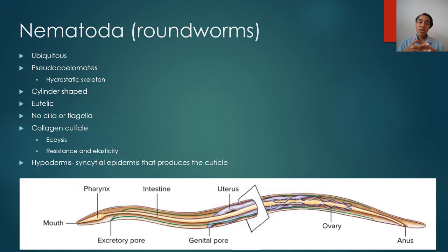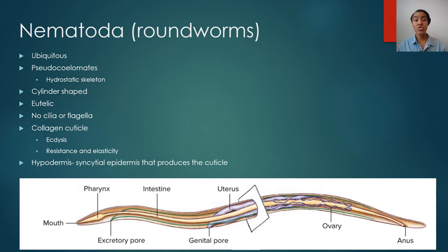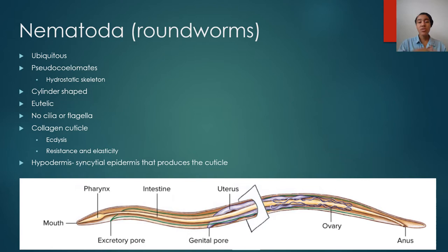Their cuticle, because it's made of collagen and the way the collagen structure overlaps, allows them to have very elastic movement. But this collagen cuticle also protects them from drying out, from host gut and digestive juices, and from any type of danger. So it serves two functions: protection and elasticity. Nematodes have an epidermal layer called the hypodermis — a syncytial epidermis that produces the cuticle. If you don't remember what a syncytium is, please go back to our Platyhelminthes lecture or our developmental lecture.